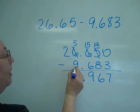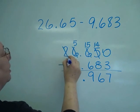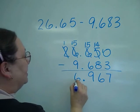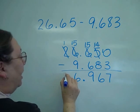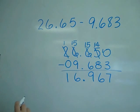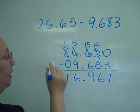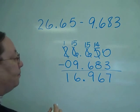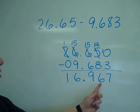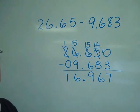And then five from minus nine, can't do it. So I come next door and I have fifteen minus nine is six. And then one minus the nothing. And you could have put a zero in there to make sure things are lined up and that you don't lose that last column. So my answer is sixteen and nine hundred sixty-seven thousandths.